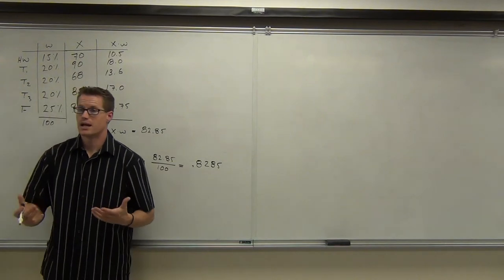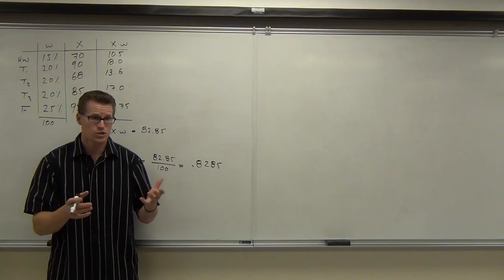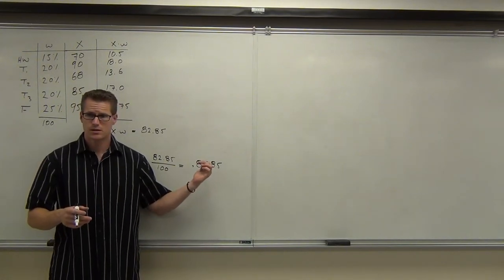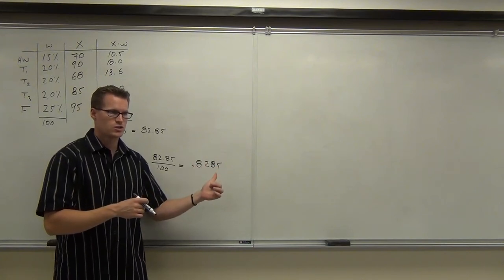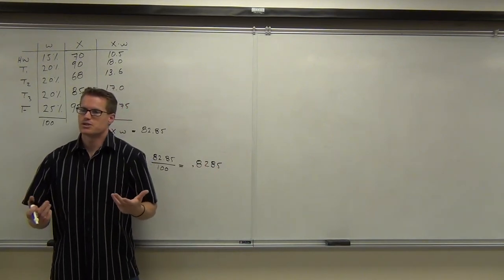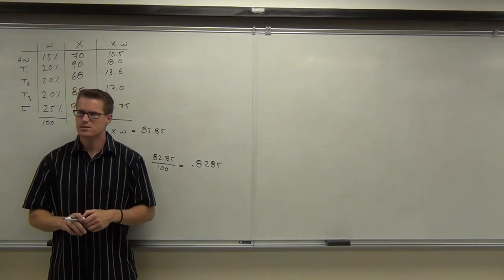And that's your grade out of one. So that's the proportion of your grade right there. So as a percentage, you could change it to a percentage, right? Change the percentage by pretty much undoing this step, changing it back to 82.85. That's your grade in this class. You would have about an 83%. So you'd have a middle of the road B. Does this make sense to you?